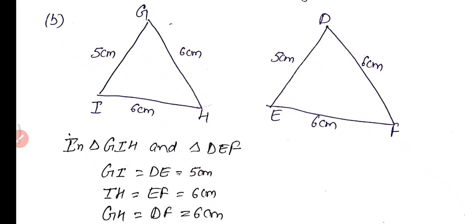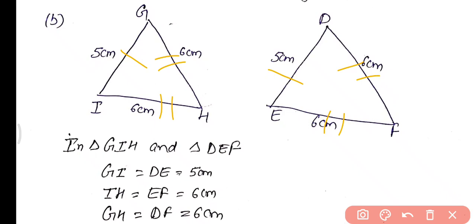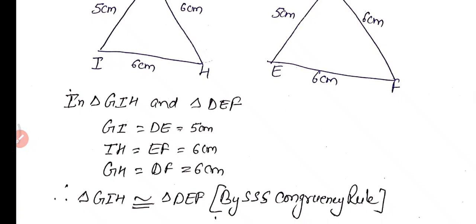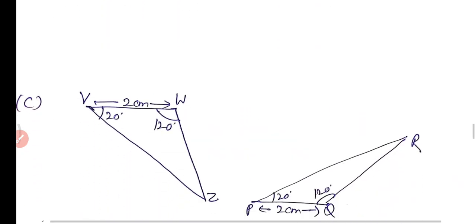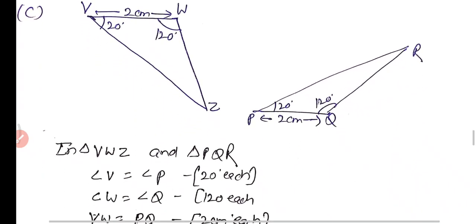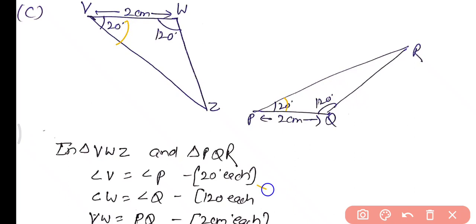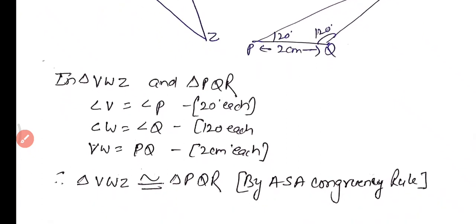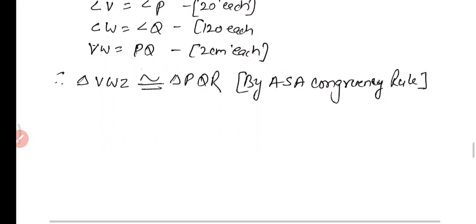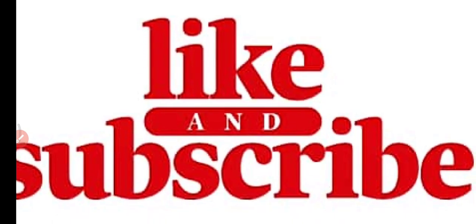Now the next pair: triangle GIH and triangle DEF are congruent by the Side-Side-Side rule. GI equals DE equals 5 cm, IH equals EF equals 6 cm, and GH equals DF equals 6 cm. Therefore these two triangles are congruent by the SSS congruency rule. For the next pair, triangle VWZ and triangle PQR: angle V equals angle P, that is 20 degrees; angle W equals angle Q, that is 120 degrees each; and VW equals PQ, that is 2 cm each. So these two triangles are congruent by the Angle-Side-Angle congruency rule.